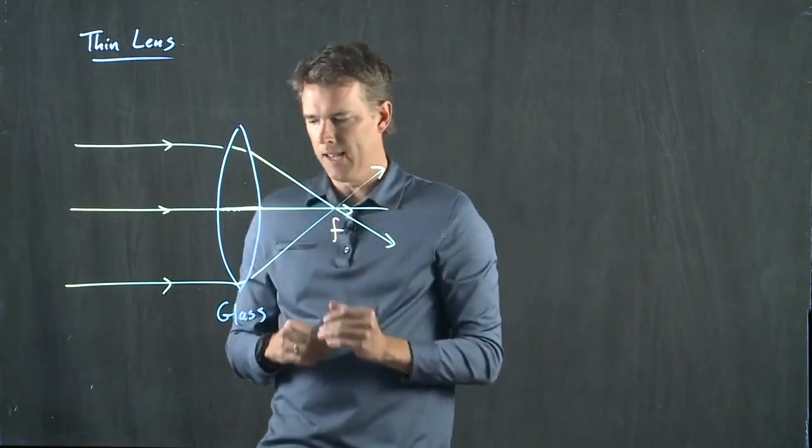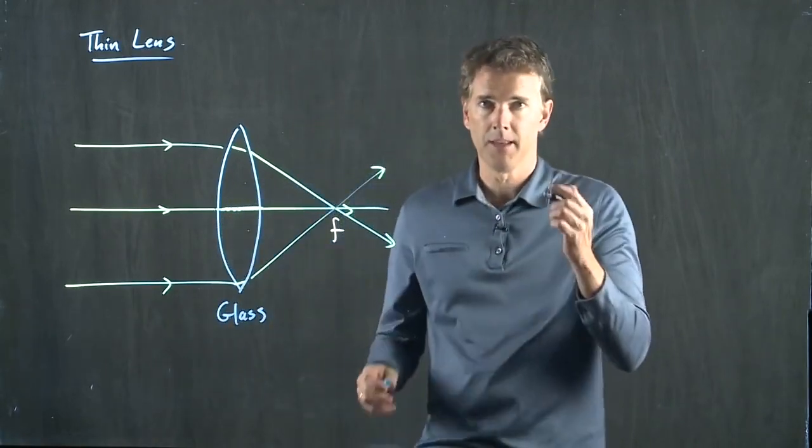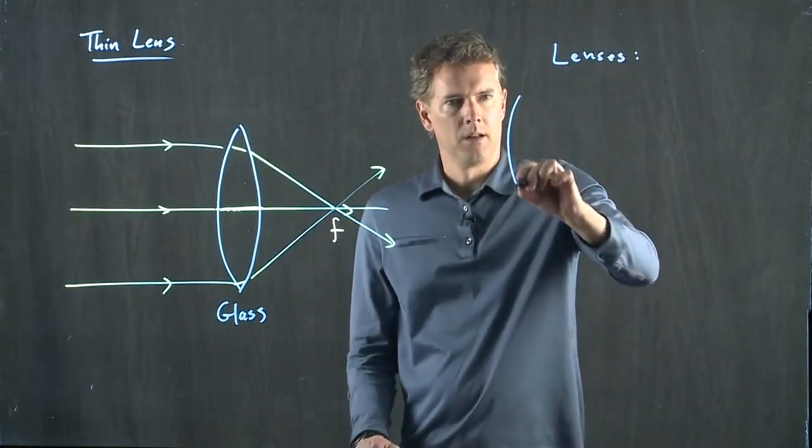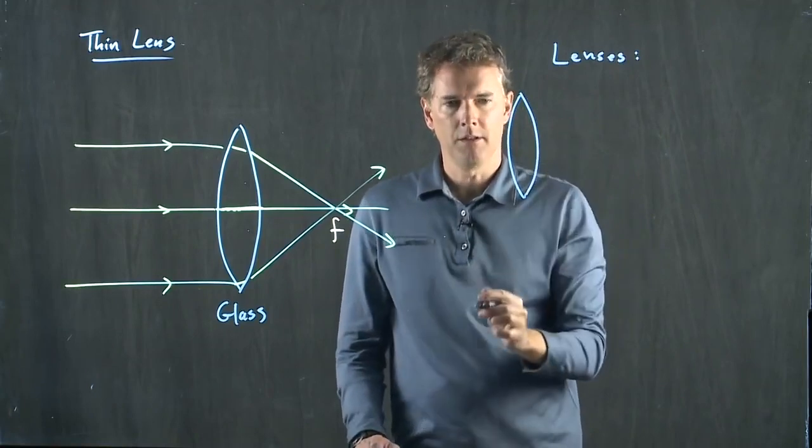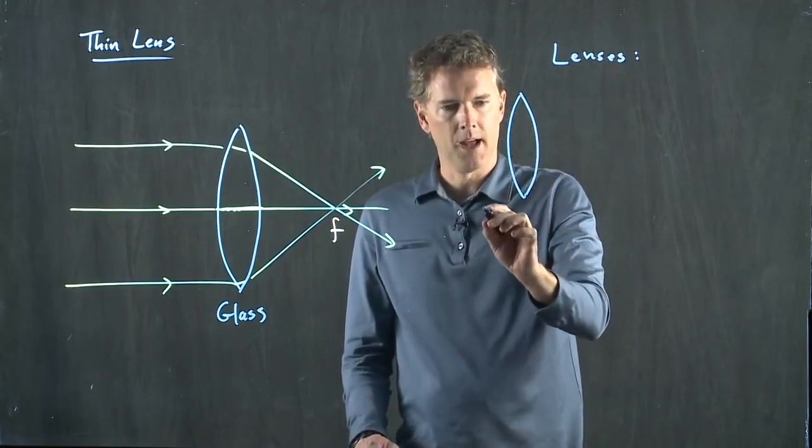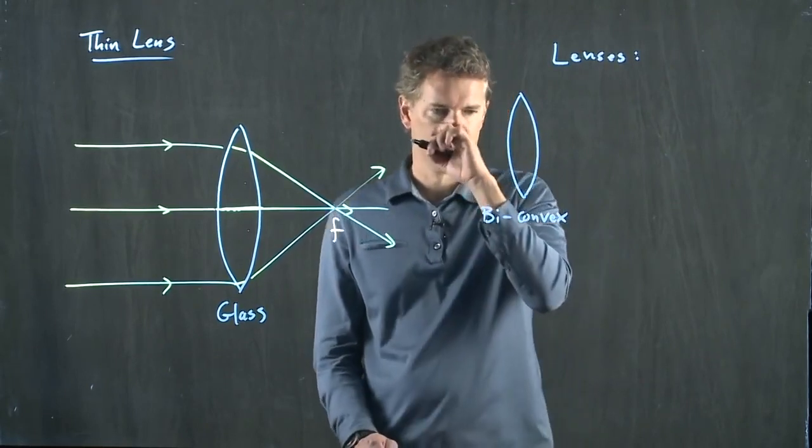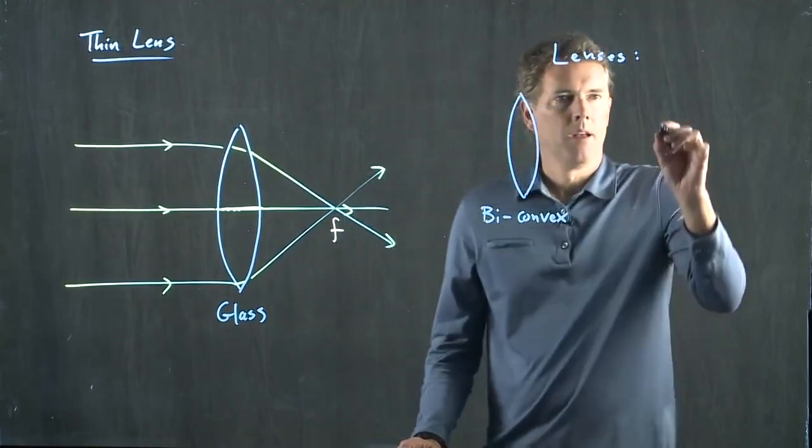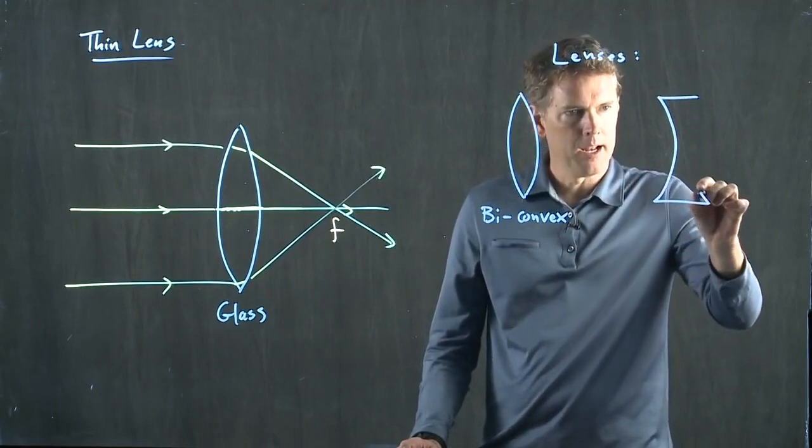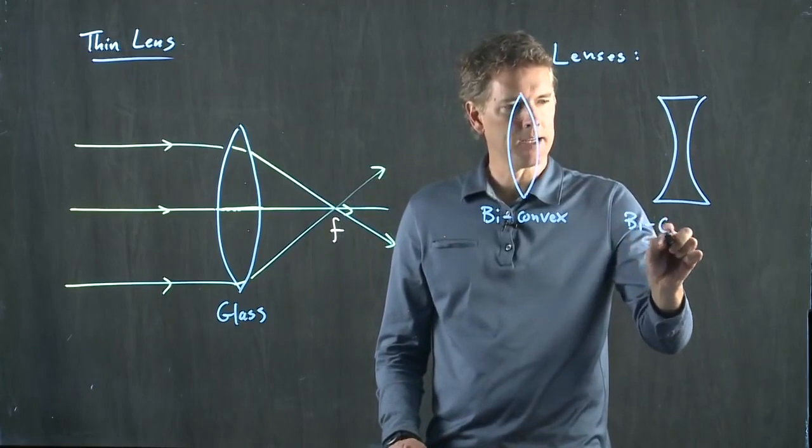This is what a lens looks like. There are a bunch of different types of lenses and let's identify a few of them. So this is curved on the first side, curved on the second side and therefore it is called biconvex. If it is curved the other way on the first side and curved the other way on the second side, then it is called biconcave.